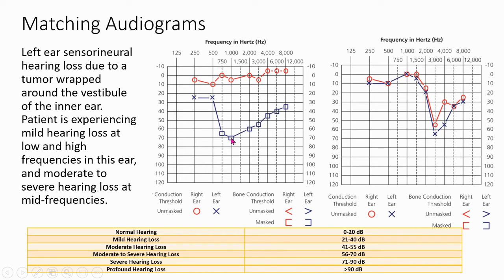That 1000 hertz range. And down here you can see that if you have to turn the volume all the way up to 70 decibels, that's moderate to severe hearing loss. Okay, so this audiogram definitely goes with our patient.